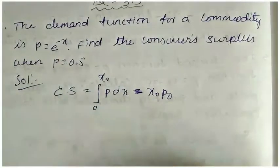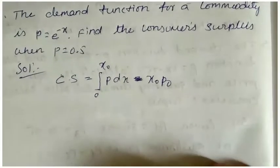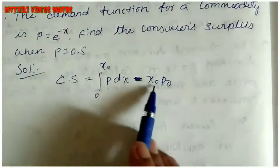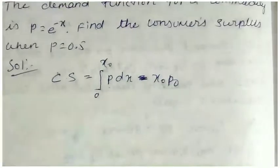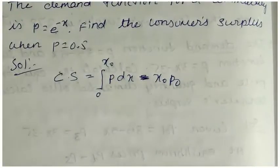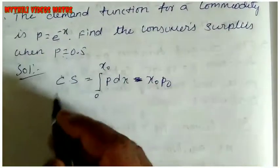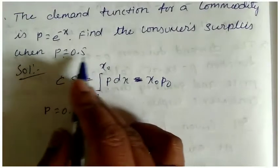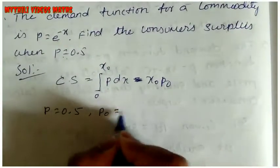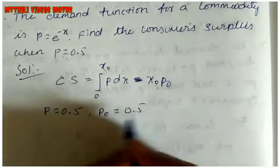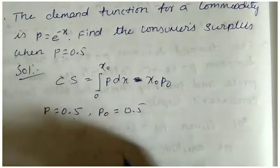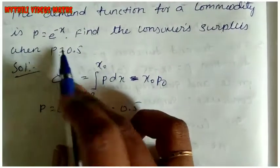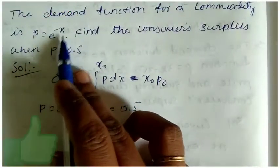Now we substitute the values. Here p = e^(-x). We will substitute the value of x₀ into p₀. Given p = 0.5, so p₀ = 0.5. We substitute p = e^(-x) and get this.